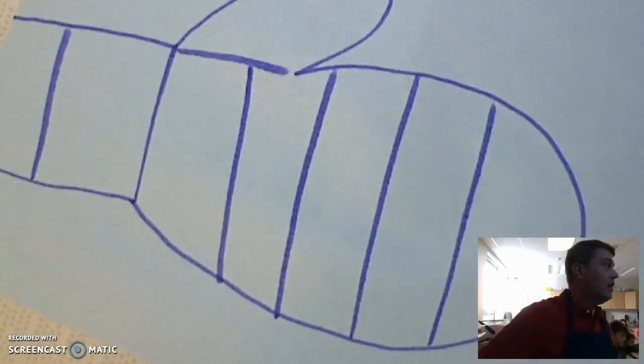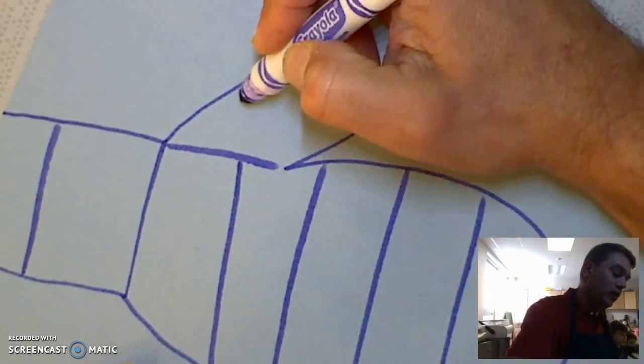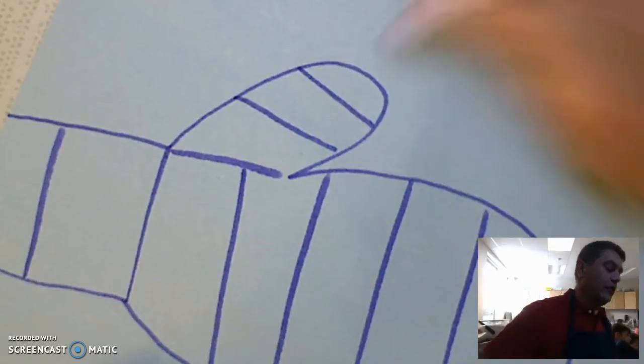So now I have my mitten, all the sections ready to put my patterns in, but I'm going to make two more lines horizontally on my thumb, one, two.